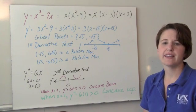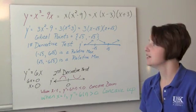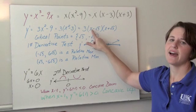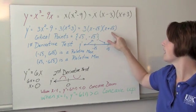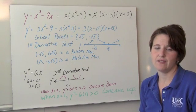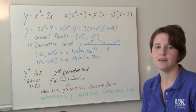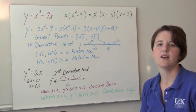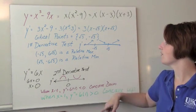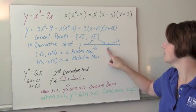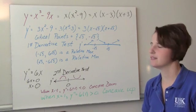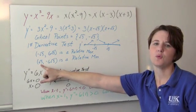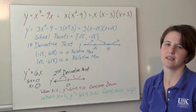To find where we're increasing and decreasing, we take the first derivative: 3x squared minus 9, factored as 3 times (x minus √3) times (x plus √3). The first derivative equals zero when x equals √3 or negative √3 — those are our critical points. Doing the first derivative test, the graph is increasing, decreasing, and increasing. So we have a relative max at x equals negative √3 with y value 6√3, and a relative min at x equals √3 with y value negative 6√3.